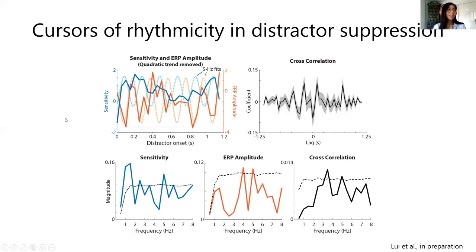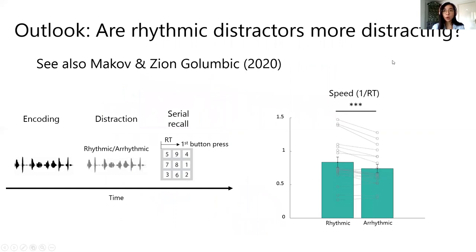This is more or less consistent with the notion that distractor suppression is rhythmic in nature. The next study I'm showing is a preliminary one that focuses on whether rhythmic distractors are more distracting, or whether they moderate behavioral performance.